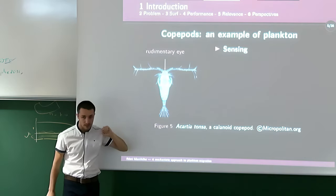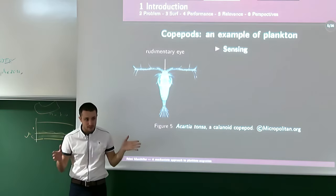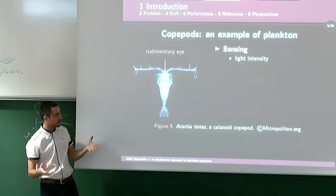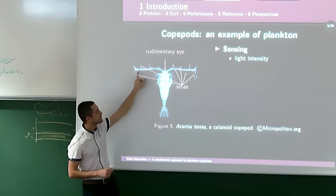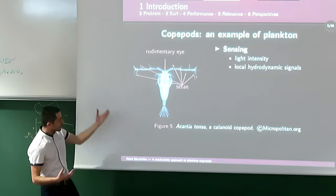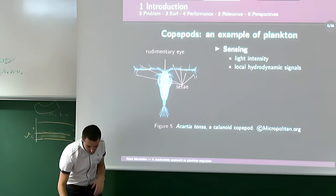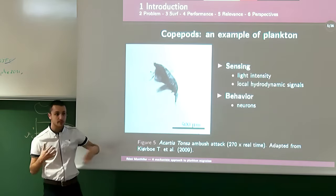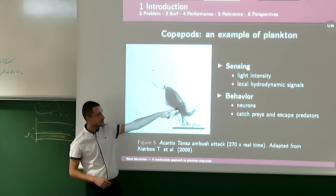Copepods have a very rudimentary eye — not sufficient to actually perceive the environment, but enough to measure light intensity. To perceive the environment, they use hair-like organs placed on their antennules called setae. They use these organs to measure local hydrodynamic signals. They also have neurons and can display interesting behaviors, such as using local hydrodynamic signals to catch prey.